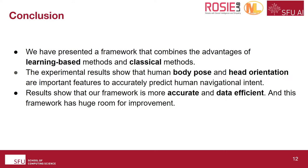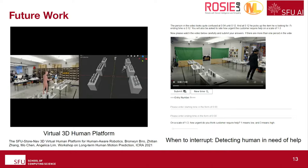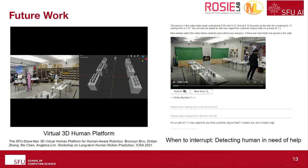For future work, we have a virtual 3D human platform where we leveraged multiple cameras to extract 3D poses and built a 3D virtual human platform, with some pose forecasting. Another work is called 'when to interrupt' — detecting humans in need of help — because we discovered in our dataset that participants frequently require assistance, appearing confused or hesitant. We are putting our data on Amazon Mechanical Turk to get annotations and will go from there.